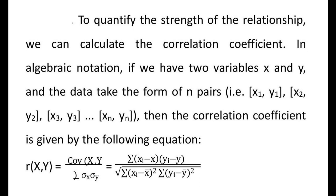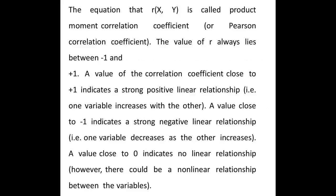Note that in a scatter diagram the response variable is always plotted on the vertical or y-axis. Here the predictor variable is age and the response variable is urea level. The equation r(x,y) is called the product moment correlation coefficient or Pearson correlation coefficient. The value of r always lies between minus one and plus one. A value closer to plus one indicates a strong positive linear relationship, meaning one variable increases with the other.